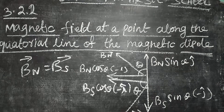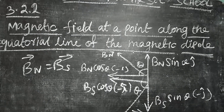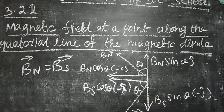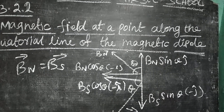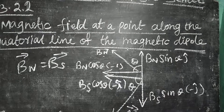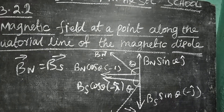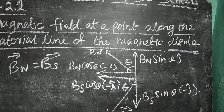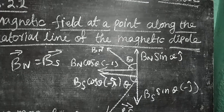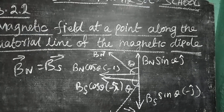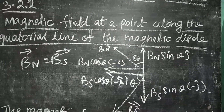From the above two equations, BN vector equals BS vector — both are equal. Now we resolve the fields into components: the vertical component BN sin theta in the j-direction and minus j-direction respectively, and the horizontal component BN cos theta in the minus i-direction and BS cos theta in the minus i-direction.